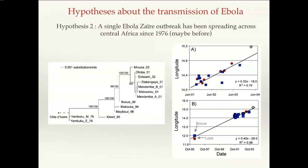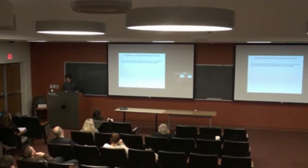An additional argument is that if you plot the longitude of different outbreaks observed in Gabon and Congo, there is a relationship between time and location — it looks like a spatial spread. The authors also did a regression showing the distance from the first Ebola outbreak in Congo in 1976 to the most recent one, claiming it represented a spatial spread throughout Central Africa.